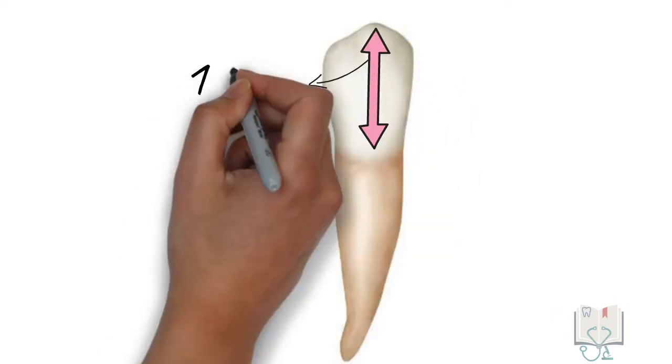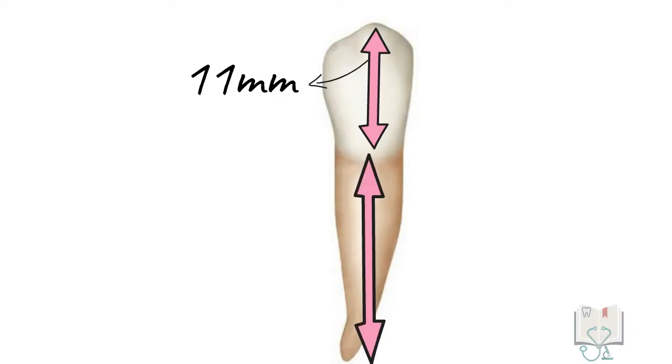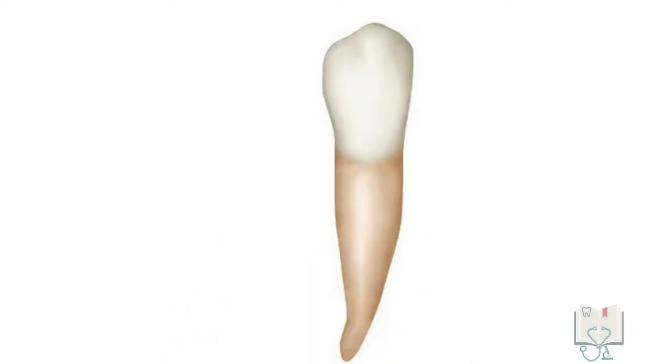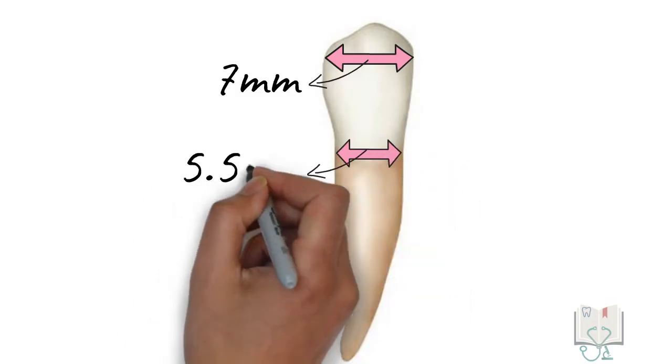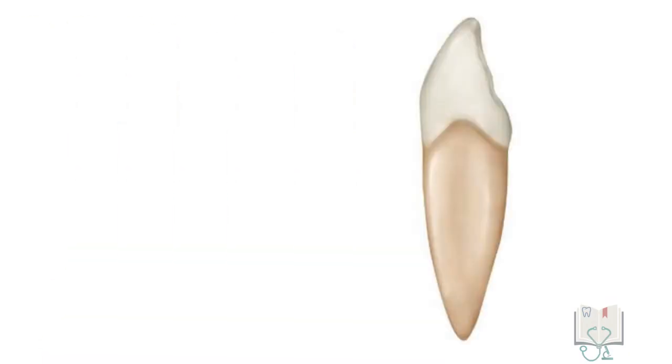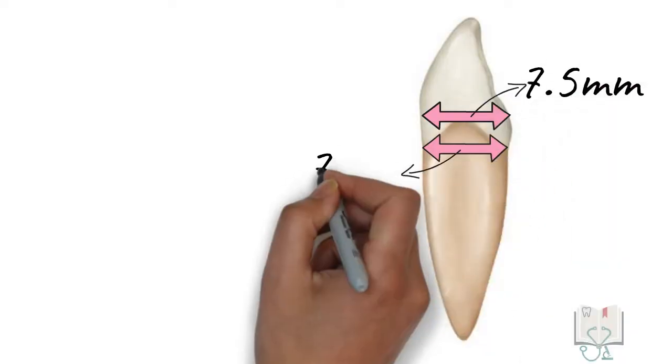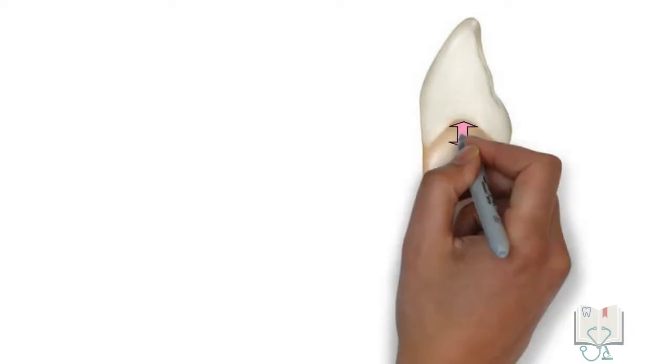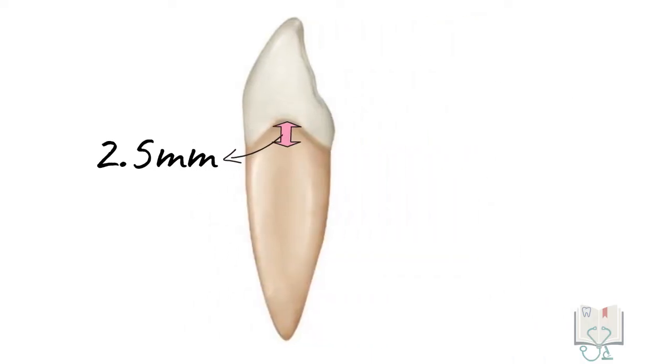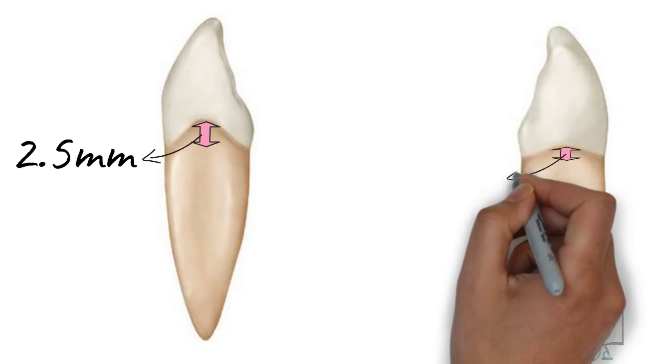Coming to its dimensions. The cervico incisal length of the crown is 11 mm and root length is 16 mm. The mesodistal diameter of the crown is 7 mm and at cervix it is 5.5 mm. The curvature of cervical line on mesial side is 2.5 mm and on distal side it is 1 mm.